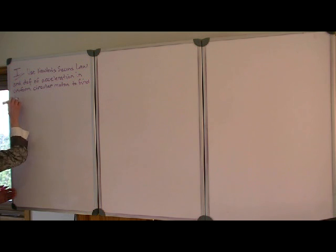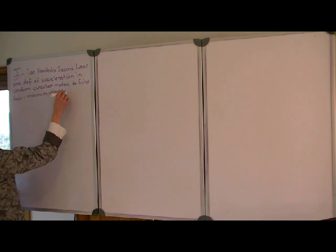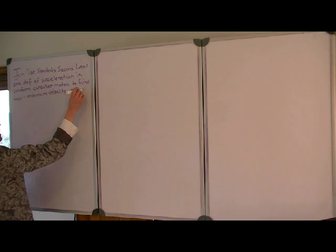And we're asked to find a certain velocity, that is, the minimum velocity, which we'll denote by Vmin. And all we're given is the radius.